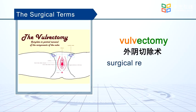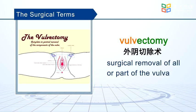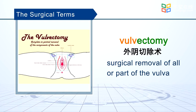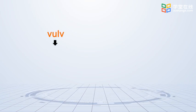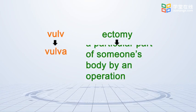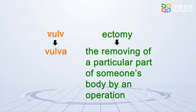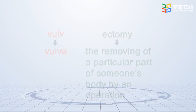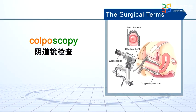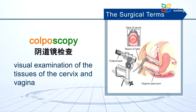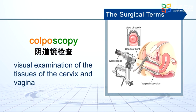Vulvectomy: surgical removal of all or part of the vulva. Colposcopy: visual examination of the tissues of the cervix and the vagina.